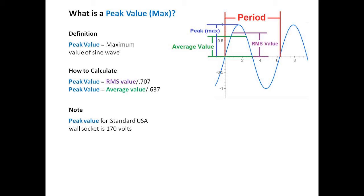Now how you calculate the peak value is you take the RMS value and you divide that by 0.707. You could also just multiply the RMS value times the square root of two. You can also divide the average value by 0.637 to get the peak value.